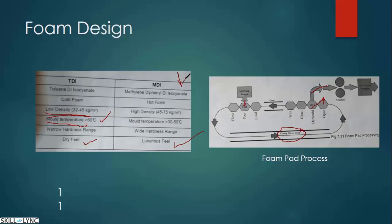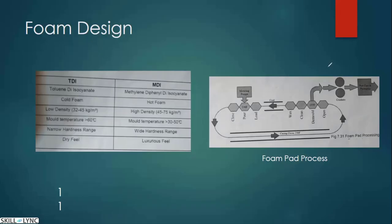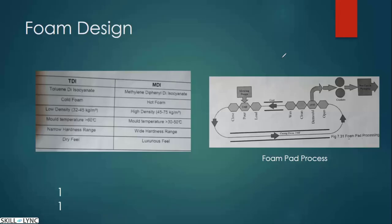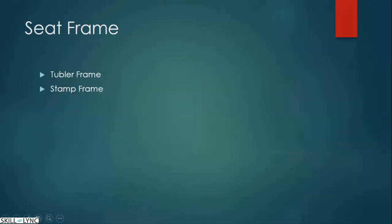After the foam comes out of the mold, there is a lot of air trapped inside. If used directly, pores will open as the foam cools and air tries to escape, creating holes in the foam. To prevent this, the foam is placed in a crusher which applies pressure to remove all the trapped air, ensuring no bubbles appear later. This is the complete process of foam making.